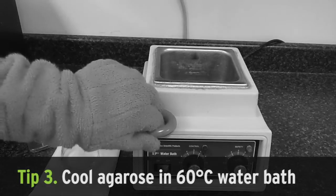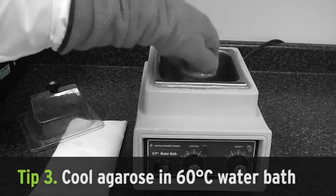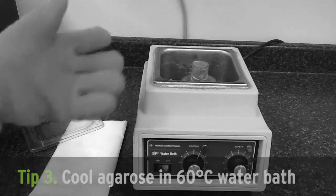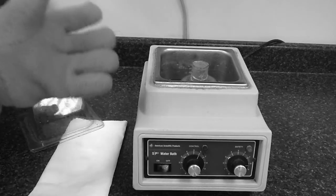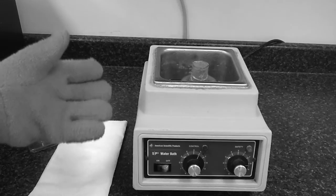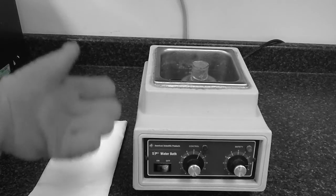Tip number three, I cool my melted agarose in a 60 degree water bath for around five minutes to bring it down to 60 really quickly. A 60 degree oven will also work if you have it available. This is nice because if you have to interrupt your gel making process for whatever reason, the gel will remain liquid at 60 so you can pour it as soon as you get back.